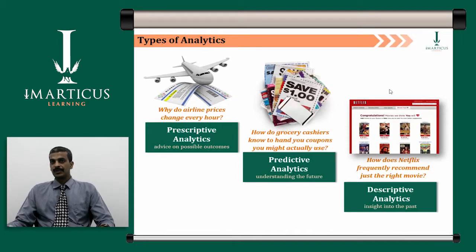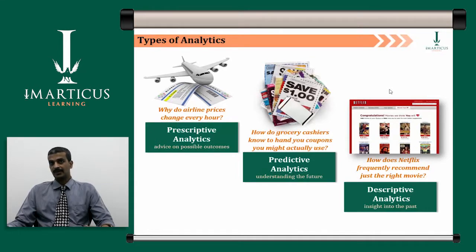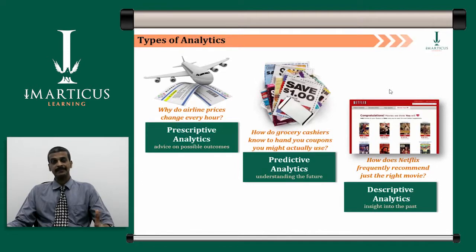For predictive analytics, consider how grocery stores know to hand you coupons you might actually use. When you repeatedly visit an outlet to buy certain items, they have all your data stored in their transactional systems. They analyze the data, understand the patterns, and identify your behavior — how many times you visited, what items you bought, and which items you haven't bought yet. They then hand you coupons for items you might use in the future, pushing you toward items you haven't purchased, increasing the chances of converting you into a potential buyer.